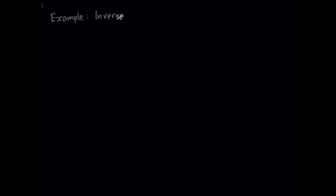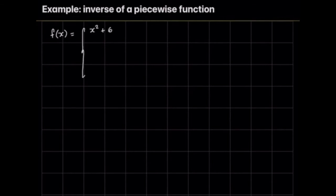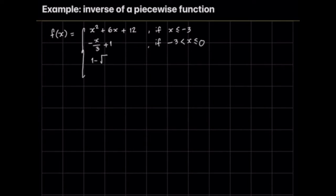For this example, we look at finding the inverse of a piecewise function, similar to the item on the quiz. Our function f(x) is the piecewise function: x² + 6x + 12 if x ≤ −3; −x/3 + 1 if −3 < x ≤ 0; 1 − √x if 0 < x ≤ 4; and 8 − 2x if x > 5.